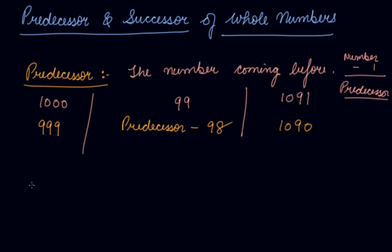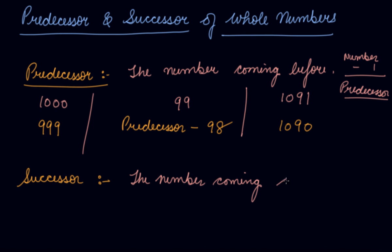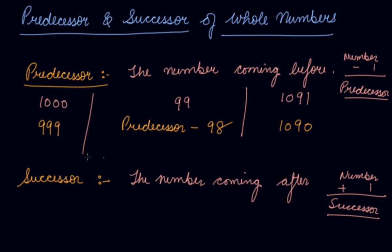In the same way, we will be studying about the successor. Successor is the number coming after. Which means that if there is a number given to you, add 1 to that number and you will get the successor — which means what is succeeding it, what is coming next to that number.